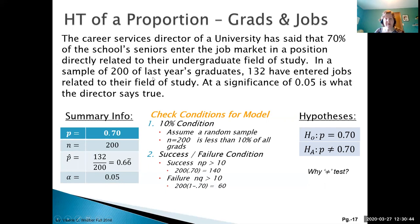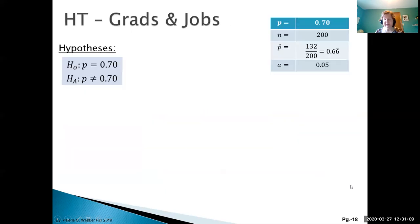Let's see if we can figure out why it's a not equal to test. We're looking at whether what the director says is true. True is that it's 70%. Not true would mean that it's different from 70%, so it could be higher or it could be lower. This is why we have a not equal to test.